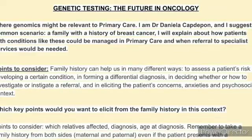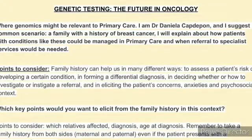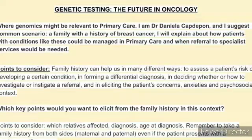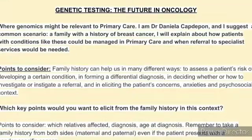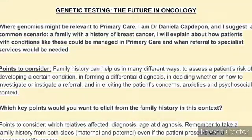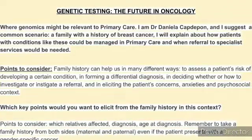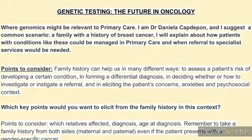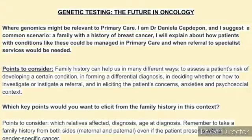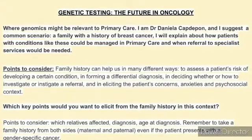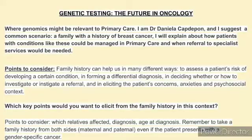We are going to go through this by considering a case — my patient, let's call her 'aunt' — with the concern about developing this kind of disease. We have two points to consider. The first point is the family history, which will help us in many different ways to assess the patient risk, the different diagnoses to be considered, and we have to be very careful and be aware about the patient's concerns, anxiety, and depression.